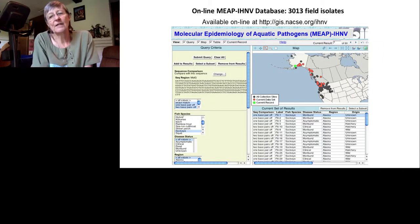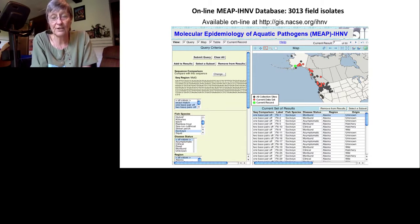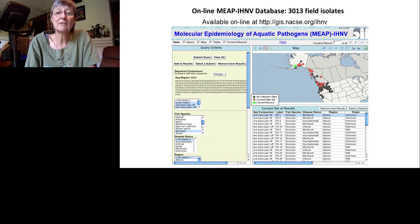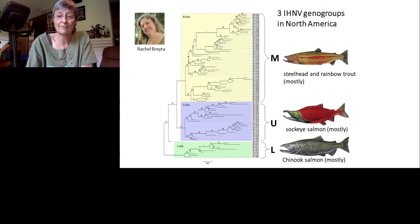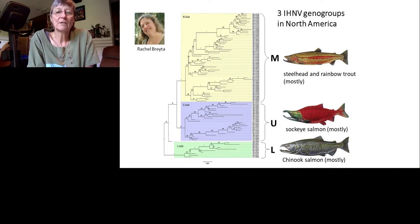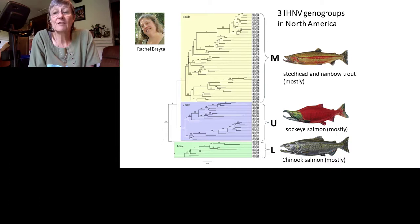We start with our database of over 3,000 field isolates, all provided by natural resource agencies conducting fish health diagnostics. We genotype them to see what they tell us. For North America, three genogroups — M, U, and L — fall out very strongly in every phylogenetic analysis. The M is mostly in steelhead and rainbow trout, the U mostly in sockeye, and the L mostly in Chinook — though with exceptions, as each is found rarely in other species.